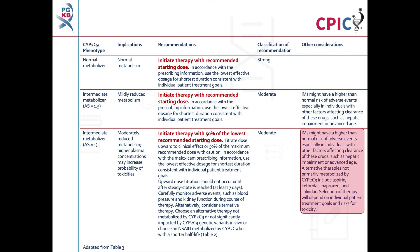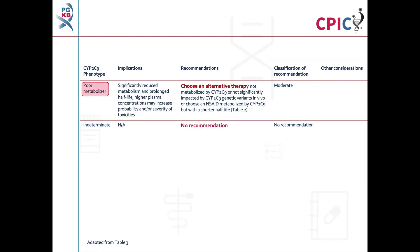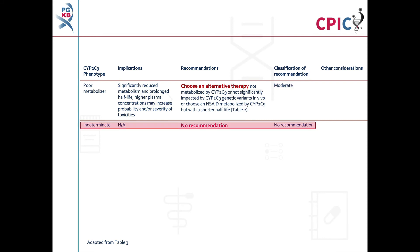CYP2C9 intermediate metabolisers may have a higher than normal risk of adverse events, which can particularly impact patients with other factors that affect drug clearance. Patients with a CYP2C9 poor metaboliser phenotype will have significantly reduced metabolism of meloxicam, which may increase the probability and/or severity of drug toxicity. An alternative therapy should be selected for these patients — this is a moderate recommendation. No recommendation is given for patients with the CYP2C9 indeterminate phenotype.